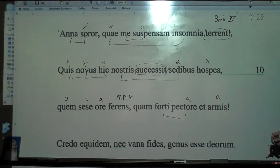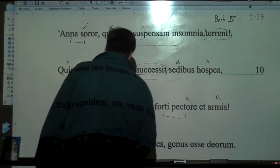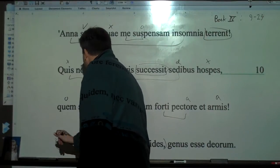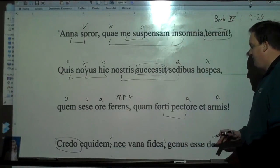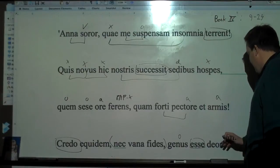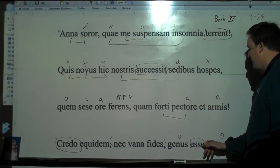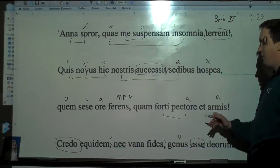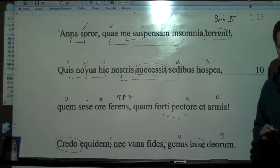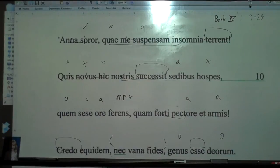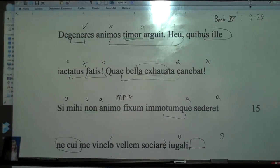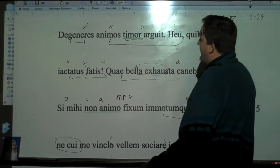Credo equidem nec vana fides, genus esse deorum. I like to kind of, with this one, I like to kind of put this in parentheses. She's just kind of saying this on her own. Credo, of course, is your verb. I believe indeed, nor is my faith in vain, that, an indirect statement, genus here, genus esse, infinitive deorum. That his race is of the gods. Okay, so I believe indeed, nor is my fidelity in vain, that his race is of the gods.